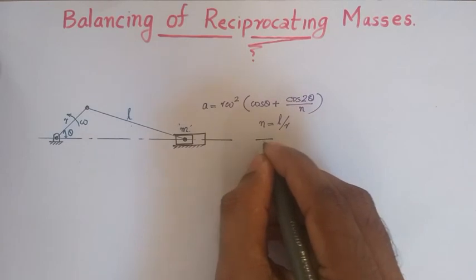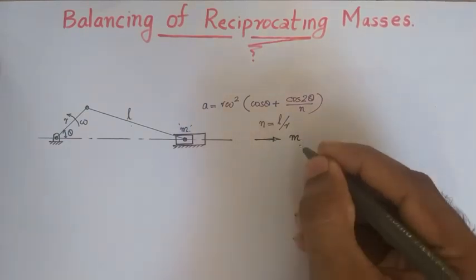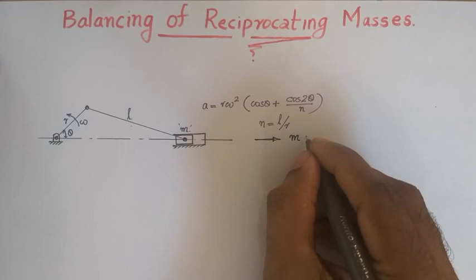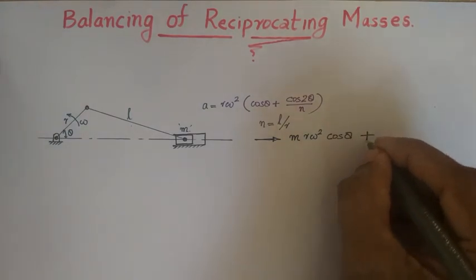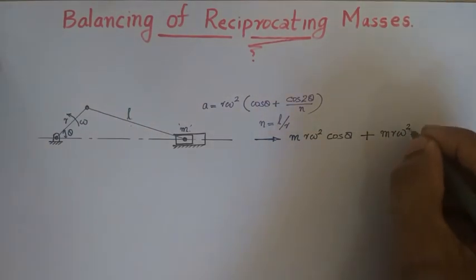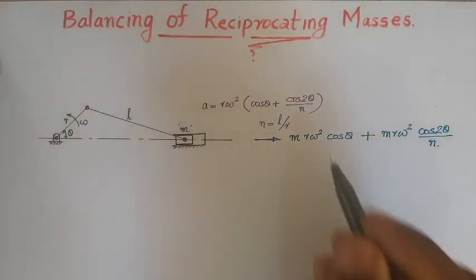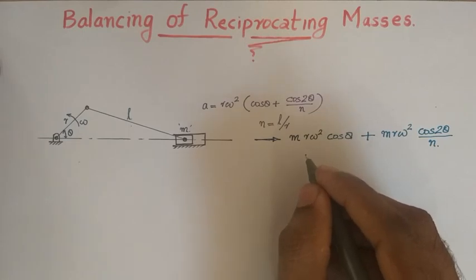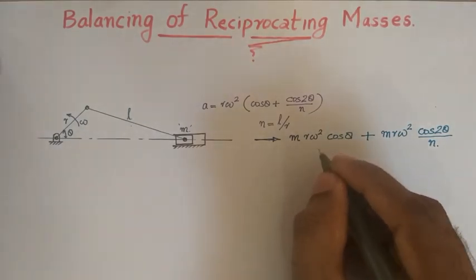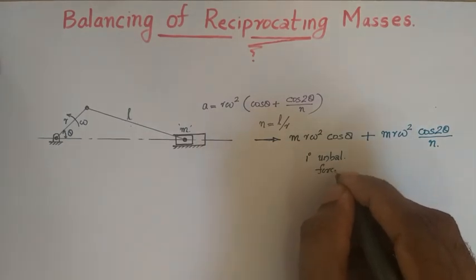The inertia force acts opposite to the direction of acceleration. The total inertia force is mass times acceleration, giving m·r·Omega²·cos θ as the first term and m·r·Omega²·cos 2θ / n as the second term. This is the net force acting along the line of stroke due to acceleration of the sliding parts, and these forces act as unbalanced forces along the line of stroke.